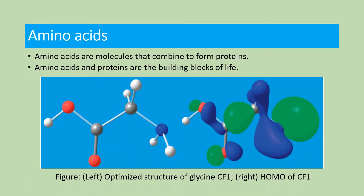Now we will discuss amino acids. Amino acids are molecules that combine to form proteins, and amino acids and proteins are the building blocks of life. As an example, we will take glycine, a type of amino acid. This figure shows the optimized structure of glycine, and on the right side you can see the HOMO — the highest occupied molecular orbital.